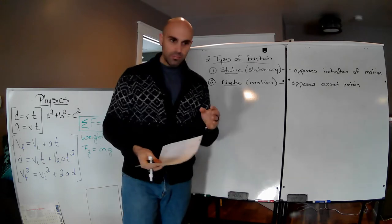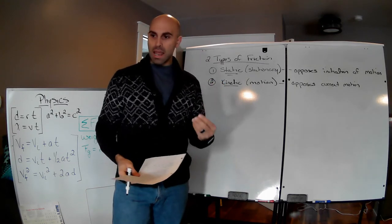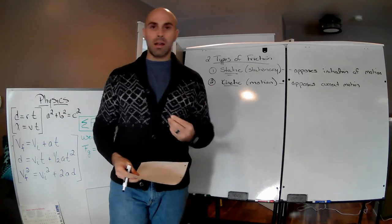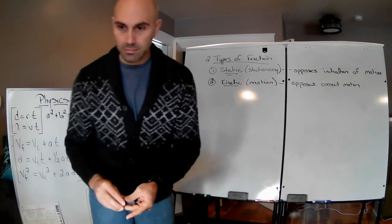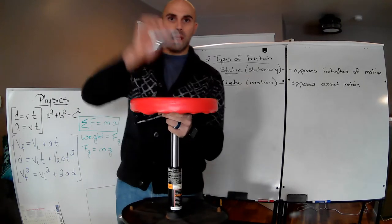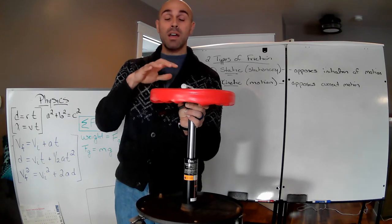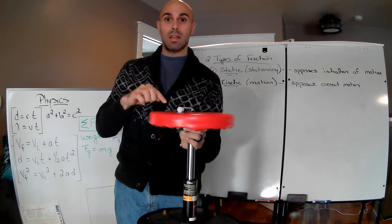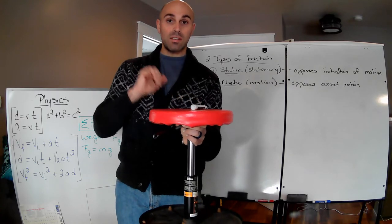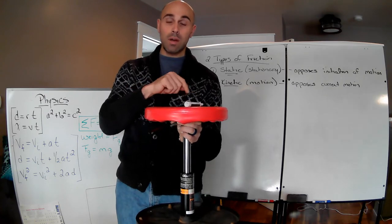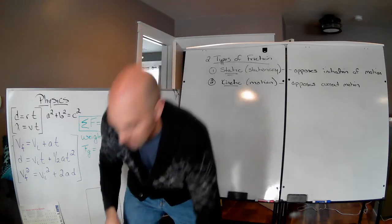Static friction is the friction that locks an object into place. If we take this surface and put a marker on it, that marker is not moving. The reason it's not moving is because there's a force keeping it bound to the surface — that's the static friction. Once it starts to move, there's still friction between the surface and the marker as it moves; that's the kinetic friction, the friction of motion.